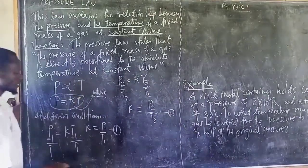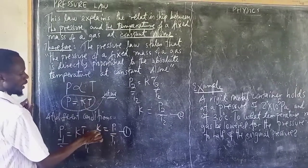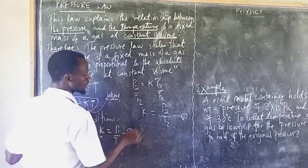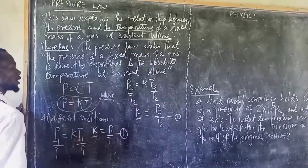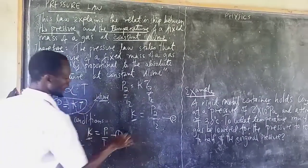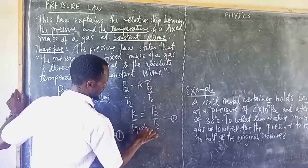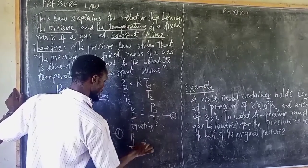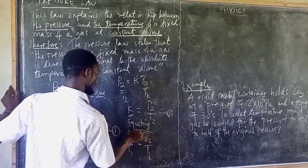Simply because K is a proportionality constant, K from the second equation and K from the first equation are equal. That is to say, by equating the two expressions, P1 over T1 is equal to P2 over T2. This is the equation.